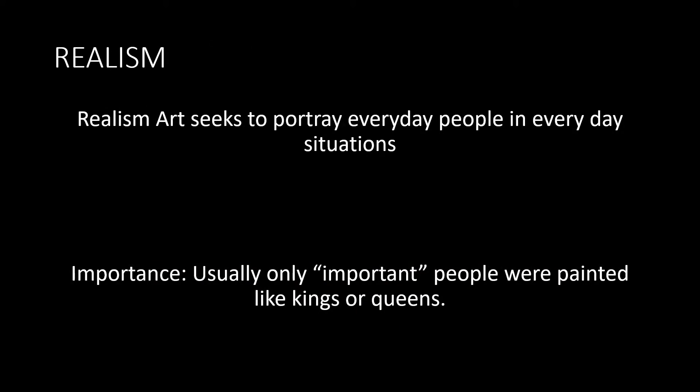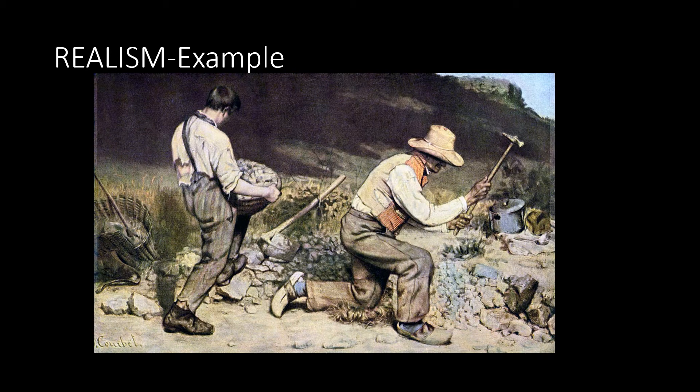Starting with Realism, Realist Art seeks to portray everyday people in everyday situations. This was important because usually only important people were painted, like kings or queens. Here is an example of a realist painting. Notice how the people in this painting are everyday people — they are miners doing their everyday jobs.